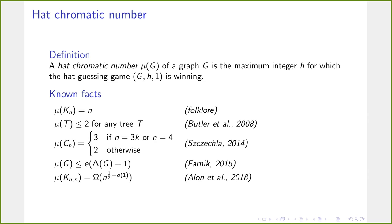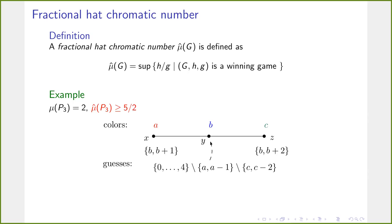Motivated by the study of the hat chromatic number, we introduce the fractional hat chromatic number, denoted μ̂. It is defined as the supremum of H/g such that the hat guessing game on visibility graph G, where each bear receives one of at most H hats and is allowed g guesses, is a winning game. So we look for the largest fraction of hatness to guessing number such that the game is winning. As an example, the hat chromatic number of P3 is two, but the fractional hat chromatic number of P3 is at least 5/2.